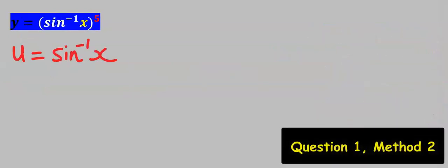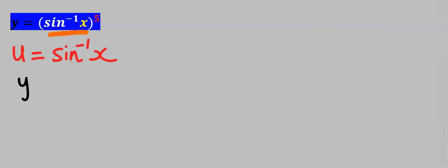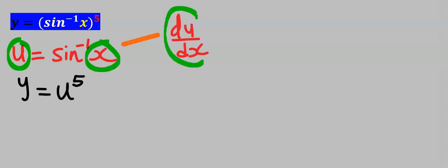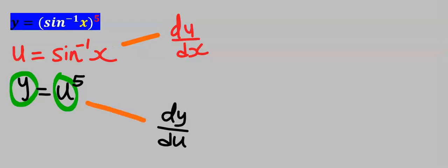We can let u be equal to sine inverse of x, and y will become u to the power of 5. We then find du/dx by treating this as a function of x, and dy/du by treating y as a function of u.